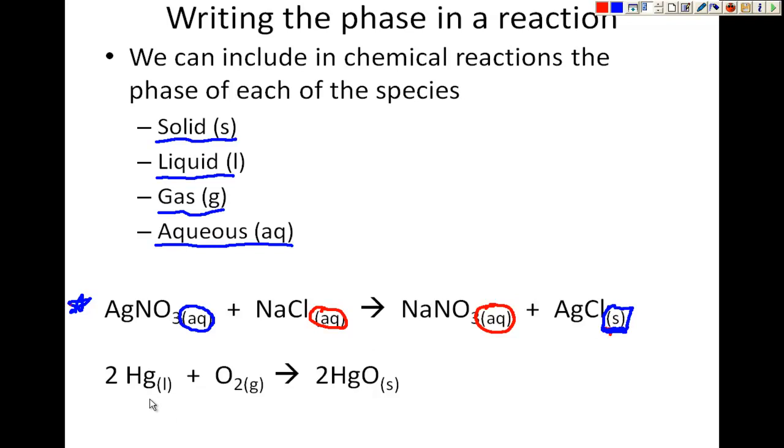Now here we have a different one. We have mercury plus oxygen gas making mercury oxide. Mercury is in liquid state, and oxygen is in a gaseous state. And when they come together, they're going to be forming some sort of solid. So again, in our chemical reactions, we're just going to give a little bit more information so that we can tell the person who's reading this what phases these things are in.